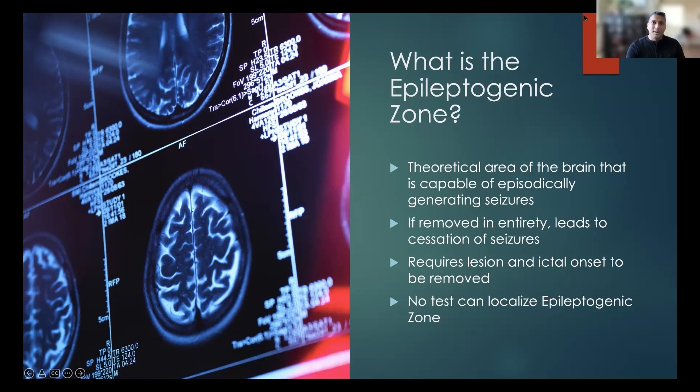The only way that we know that we've actually gotten the epileptogenic zone, that we've actually removed it, is by giving it time and seeing if the patient continues to have seizures or not. If they stop having seizures, we know that we were in that epileptogenic zone and were able to successfully treat their epilepsy, whereas other times if they continue to have seizures, obviously we weren't completely addressing that epilepsy.